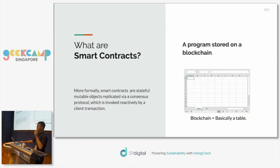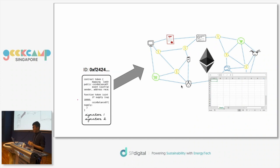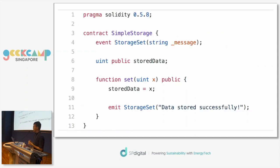So what are smart contracts? At a very high level, smart contracts are basically just a program stored on a blockchain. What's a blockchain? A blockchain is basically like a spreadsheet or a table — you can imagine it has many cells and rows. A contract can be deployed, similar to how you deploy software on AWS or Google Cloud, onto a blockchain. You can think of each deployed contract as living in a single cell in this big spreadsheet, and each contract has an address.